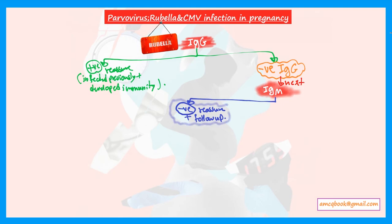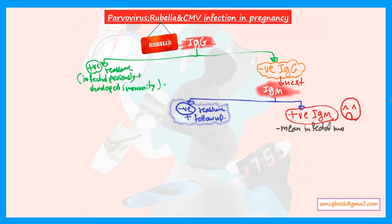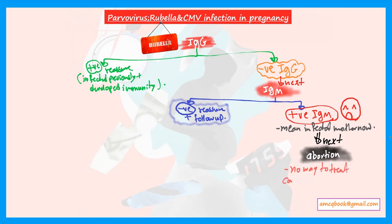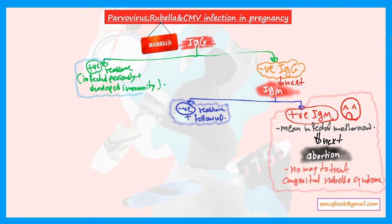If IgM is negative, reassure and follow up — the woman is not currently infected. But if IgM is positive, unfortunately that means she is currently infected, and the next step is abortion, because there is no way to treat congenital rubella syndrome. So: if IgG is negative, check IgM; if IgM is positive, the woman and fetus are infected, and the next step is abortion.